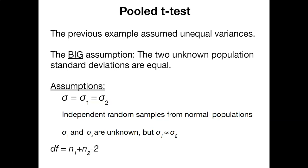The previous video showed you how to do a t-test assuming unequal variances. The big assumption there was that the two unknown population standard deviations were equal. That is to say that the value sigma was equal to sigma 1 was equal to sigma 2. So all the variances are equal.